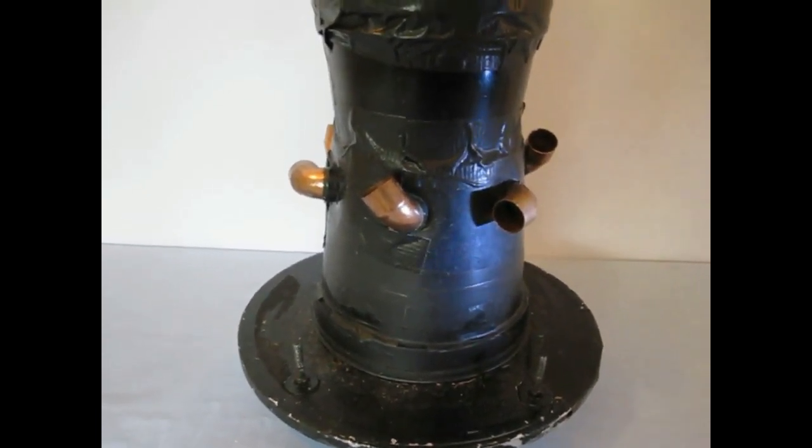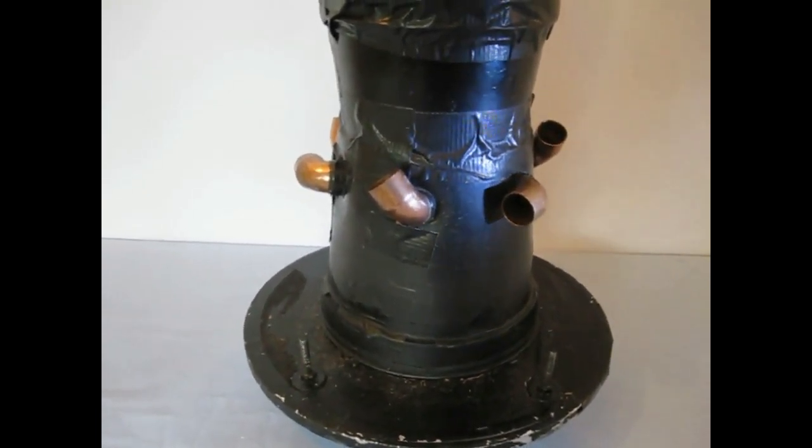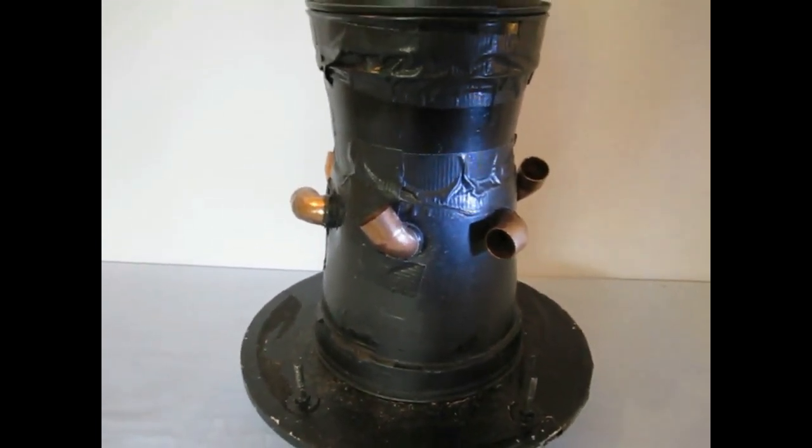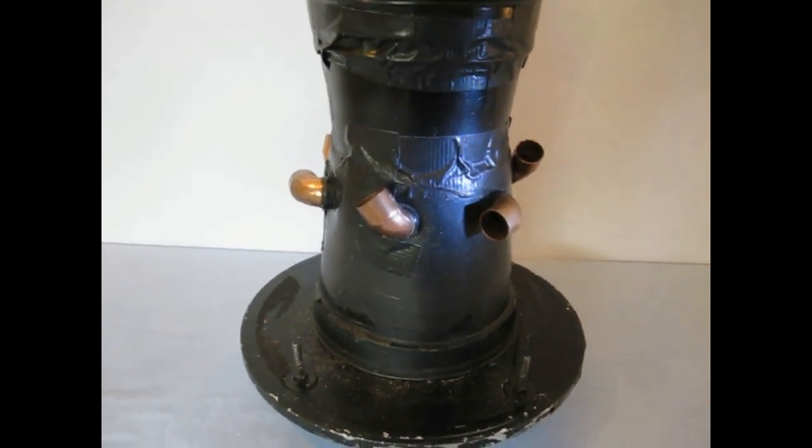The air then exits the flowerpot using these right angle 22mm plumbing fittings. This is what will be used to create rotation in the vortex.